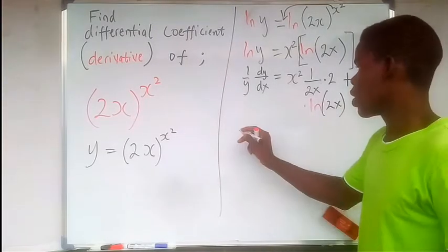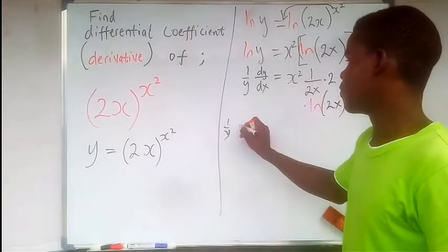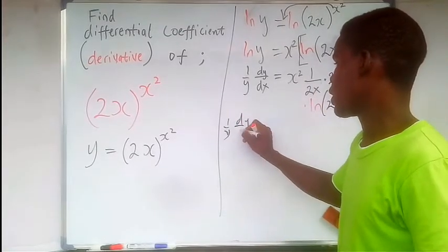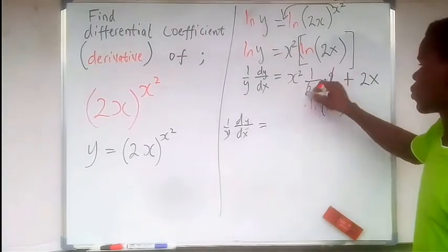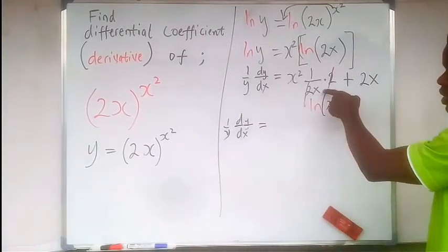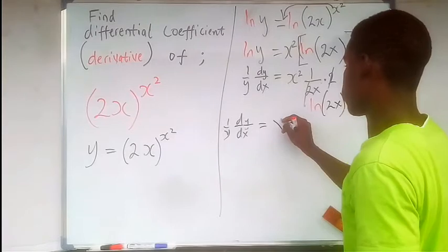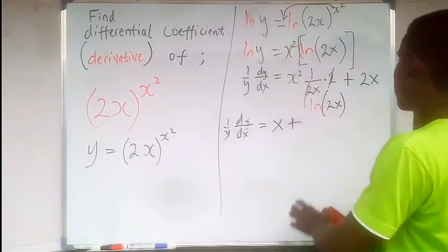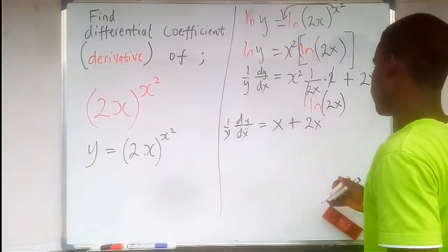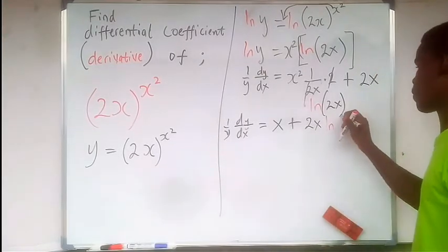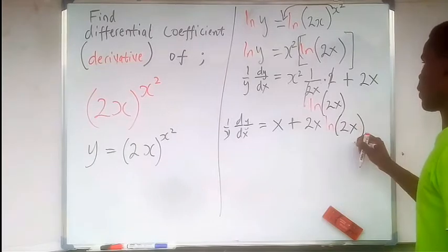Let's simplify this. We're going to have (1/y)(dy/dx). We have here x². Now you see 2 can cancel 2 here. This x² can cancel one of these x, so we're left with only a single x there. Plus 2x times ln of 2x. So 2x ln of 2x.